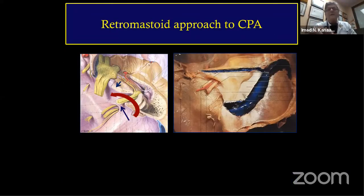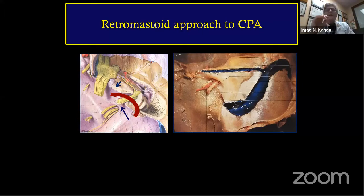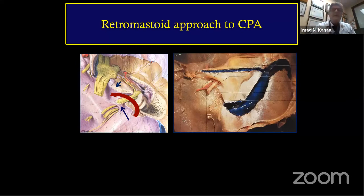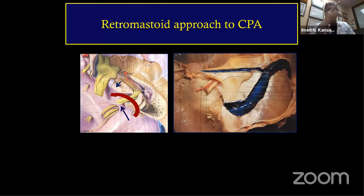The retromastoid approach gives you several avenues. When I have a large tumor more medially located, I prefer the suprameatal approach. This was described by Amirati and Majid Samii: the suprameatal approach accesses the tumor and the tentorium is incised medially, giving access to extension along the tentorial ledge and below the facial-vestibular nerve complex.